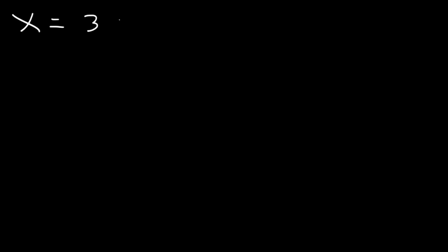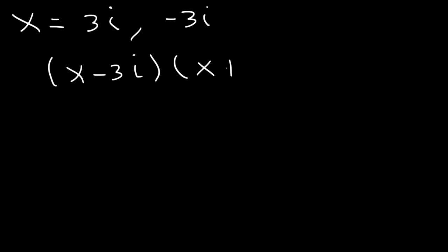The same is true for imaginary numbers. If x equals 3i, the other solution must be negative 3i. So in factored form, it's (x minus 3i)(x plus 3i).